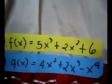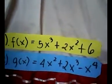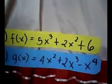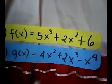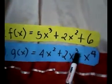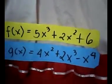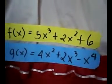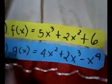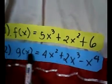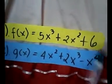The second example is g of x is equal to 4x squared plus 2x cubed minus x to the 4th power. The degrees of the terms of g of x are 2, 3, and 4, respectively. Therefore, the degree of g of x is 4.